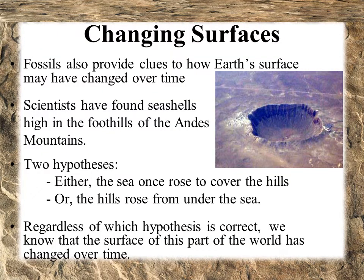Fossils once found help to provide us clues on how the surface has changed over long periods of time. When paleontologists find seashells high in the foothills of the Andes, we know that the area was once very different. Either the sea once rose to cover the hills, or the hills rose up from under the sea. Either way, we know the surface here was once covered with the ocean.